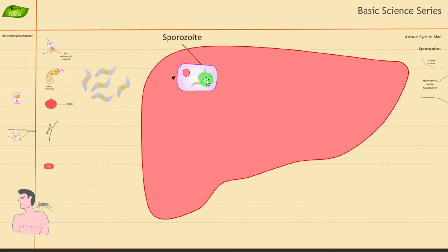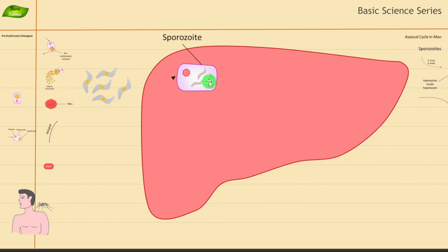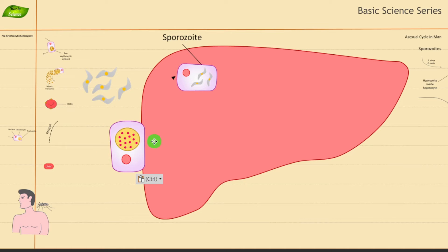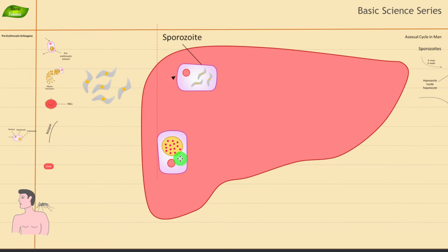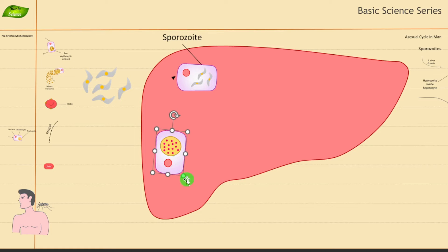The sporozoite has entered inside the liver cell. In various other species, the parasite can undergo a dormant phase, meaning it can stay dormant inside the liver cell. This is a very fascinating aspect of how infection occurs with parasites, and how they have evolved the infection process.